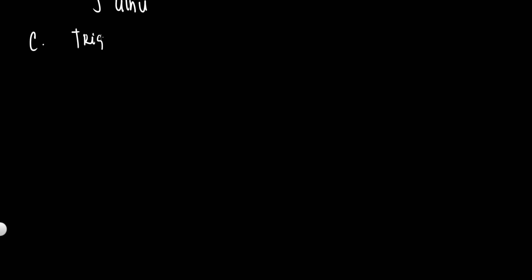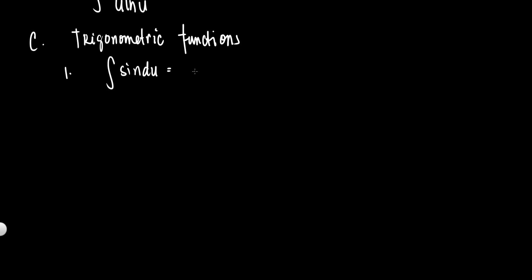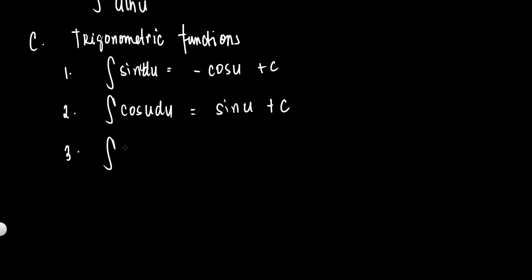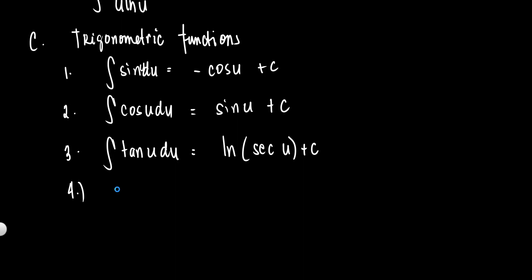For letter c, we have the formula for trigonometric functions. Number one: the integral of sin u du is equal to negative cosine u plus c. Number two: the integral of cosine u du is equal to positive sine u plus c. Number three: the integral of tangent u du is equal to ln of secant u plus c. Number four: the integral of cotangent u du is equal to ln of sine u plus c.